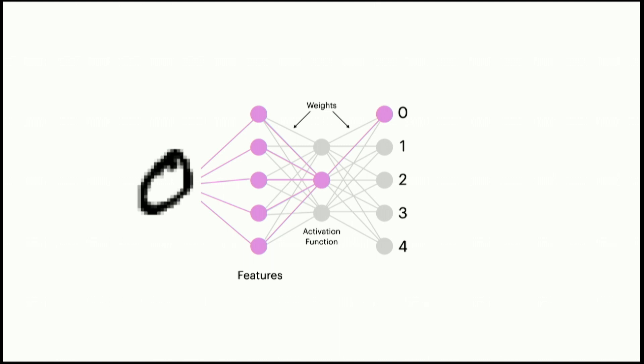This gives us an output — in this case zero, which is correct. As the model is presented with different examples of zero, it updates the importance given to each feature of the input. This is repeated over and over again, with the model updating its weights until it converges to a relatively high accuracy. In this process, it is learning an internal representation of zero.